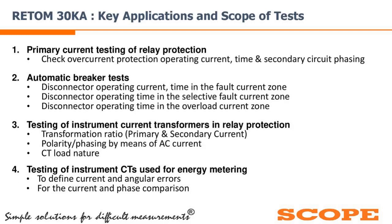For automatic breaker tests we can check: disconnector operating current and time in the fault current zone, disconnector operating time in the selective fault current zone, and disconnector operating time in the overload current zone. For testing of instrument transformers, we can easily check the primary-secondary current relationship, polarity of the CT, CT load nature, and testing of revenue metering CTs to define current and angular errors. We can also perform current and phase comparison.